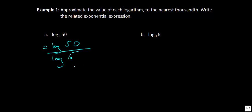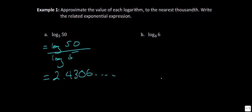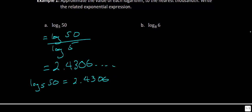One of the most common mistakes students make is thinking this simplifies to log(10) — that is, 50 divided by 5 — but those are not equivalent. Using the calculator, log(50) divided by log(5) gives approximately 2.4306. That means log base 5 of 50 ≈ 2.4306, which in exponential form means 50 = 5^2.4306. This makes sense because 5² = 25 and 5³ = 125, so it must fall in between.